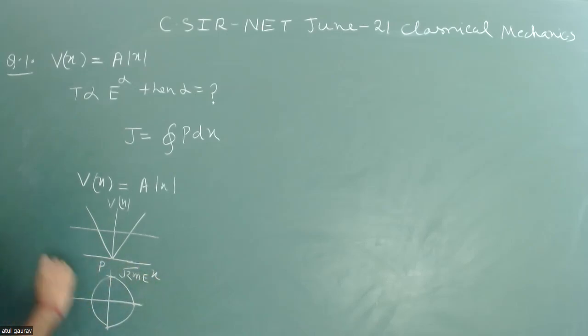And this value is equal to root under 2mE. Here y-axis we have momentum and x-axis we have position. This value is equal to E upon a, so this is our turning point. This value is minus E upon a, and this value is equal to minus root under 2mE.